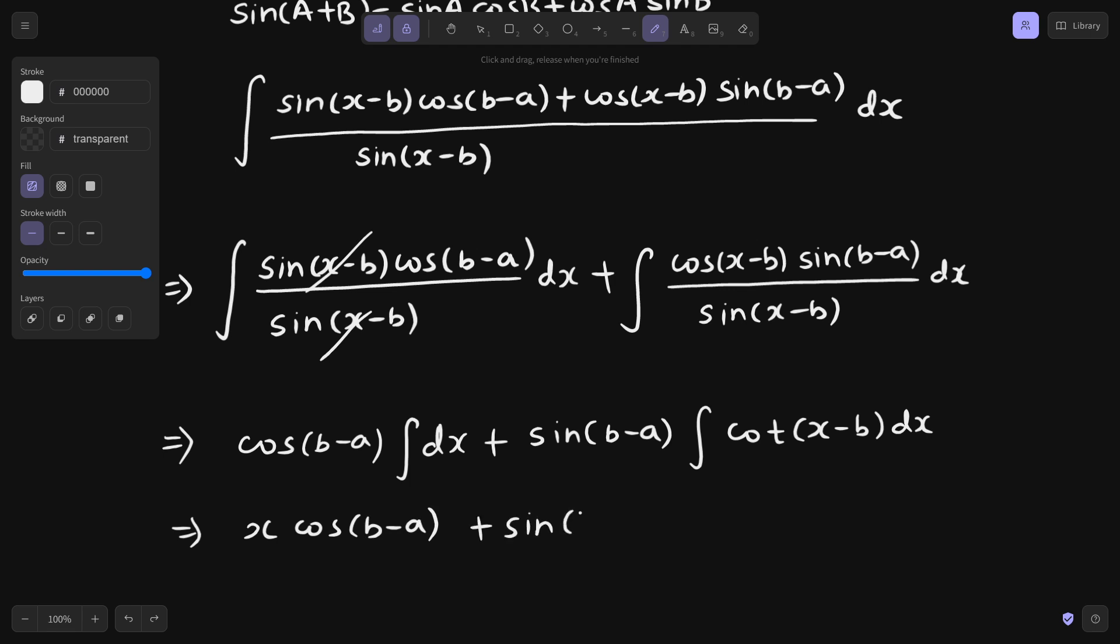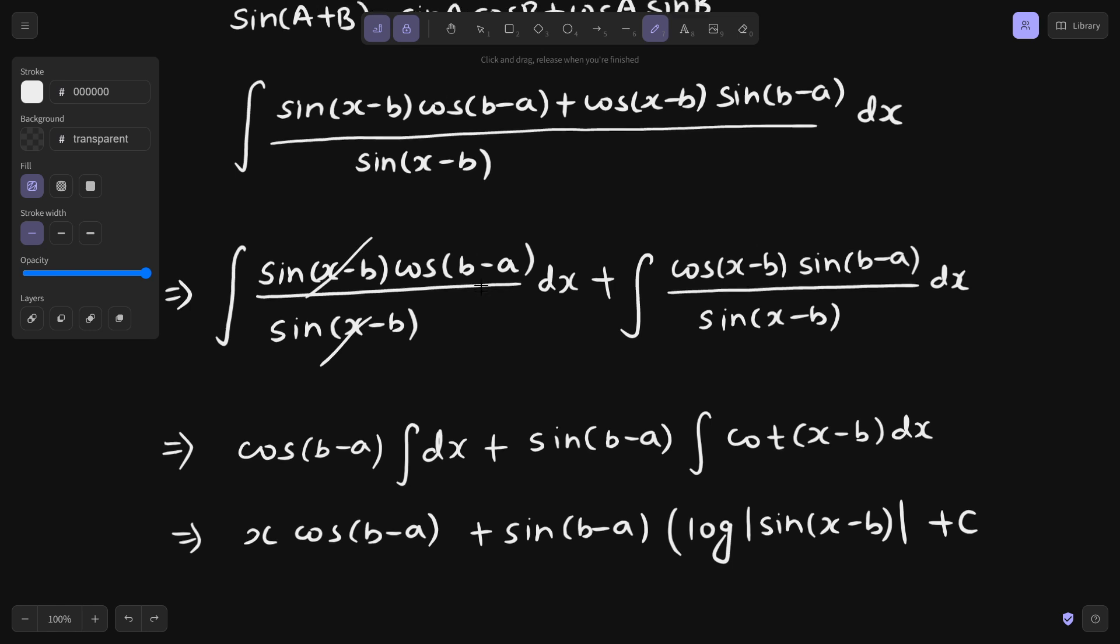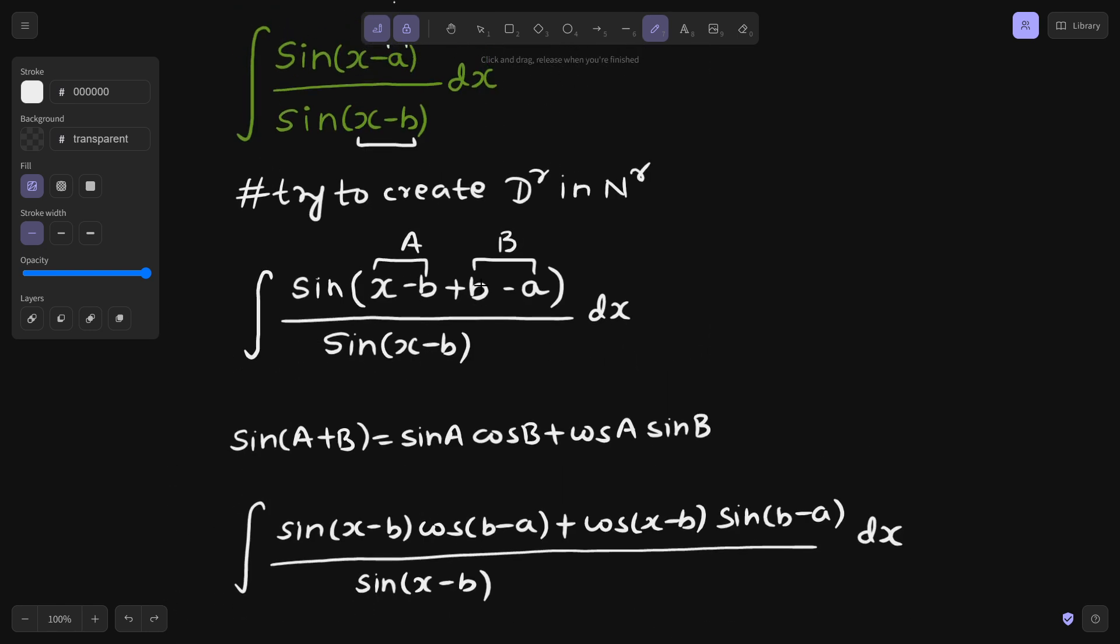So sin b minus a multiplied by log sin x minus b plus a constant c. So this is going to be the final answer for this particular question, not much different from what we had solved in the previous problem. It was just x plus a divided by x plus b, and similar here.